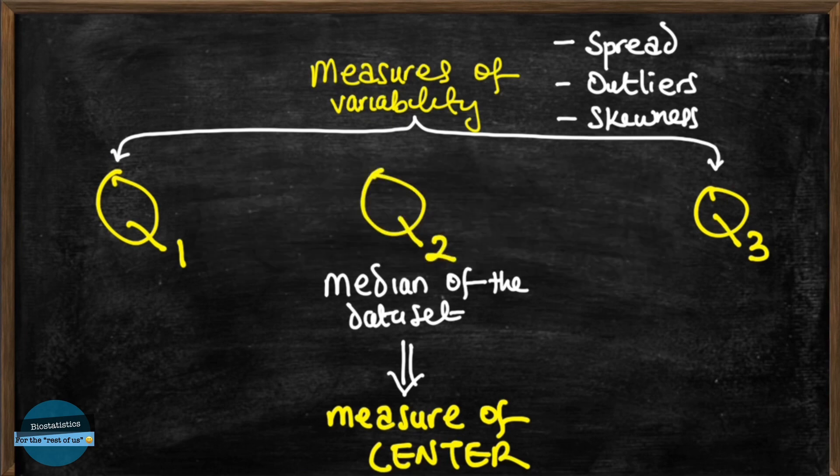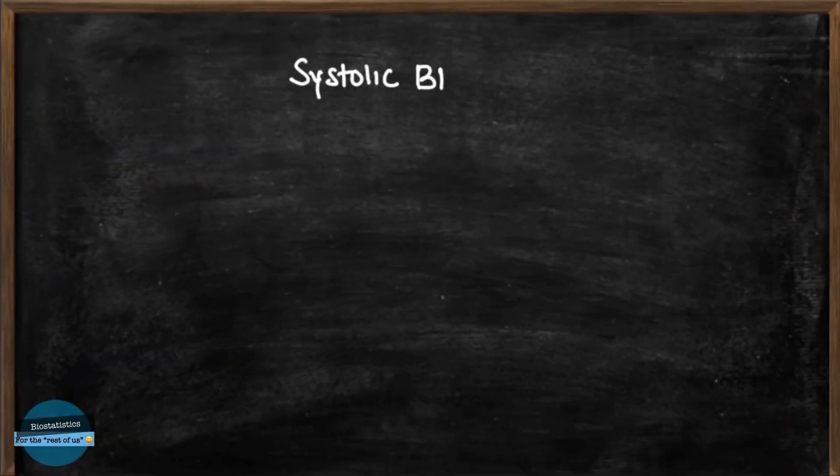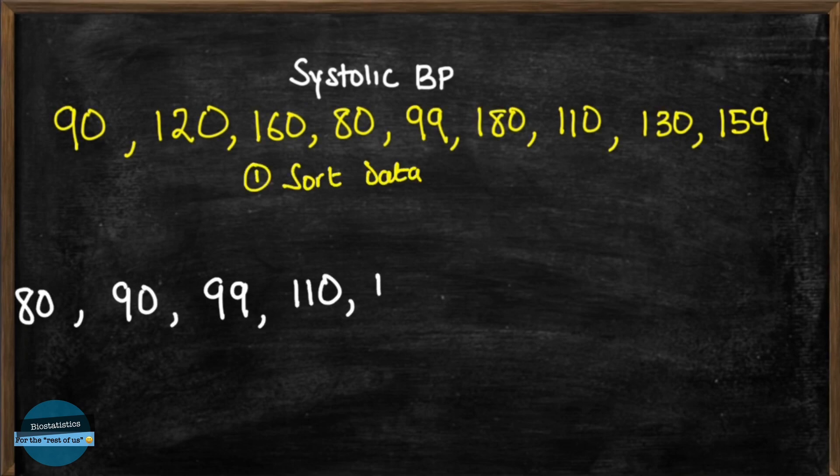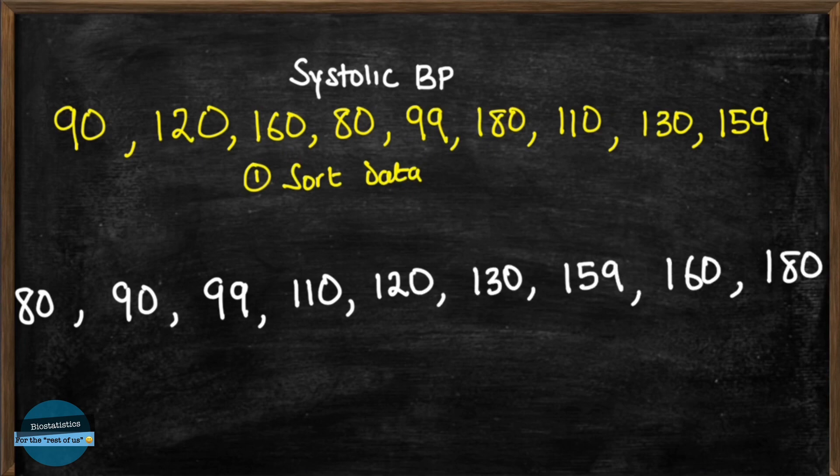So how do we calculate quartiles? Let's use an example of this data set of systolic blood pressures of all the patients that attended the cardiology clinic of Amadou Belou University teaching hospital last week Tuesday. All these values are in millimeters of mercury. First, we'll need to sort this data from smallest to the largest.